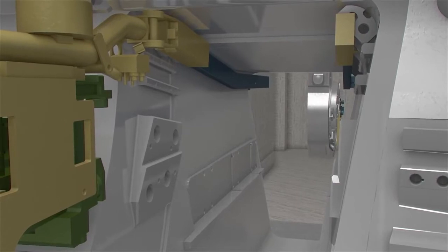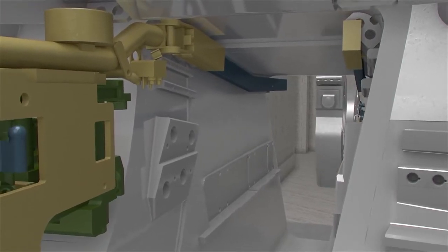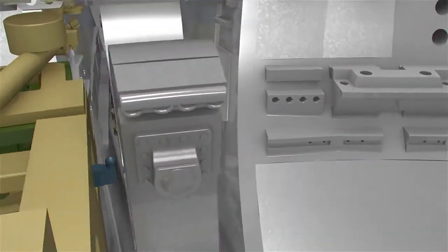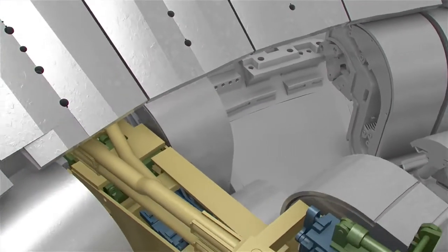The installation of the blanket system will be, finally, followed by the diverter. Situated around the bottom of the vacuum vessel, it acts like a giant exhaust system extracting helium ash and other impurities from the plasma.